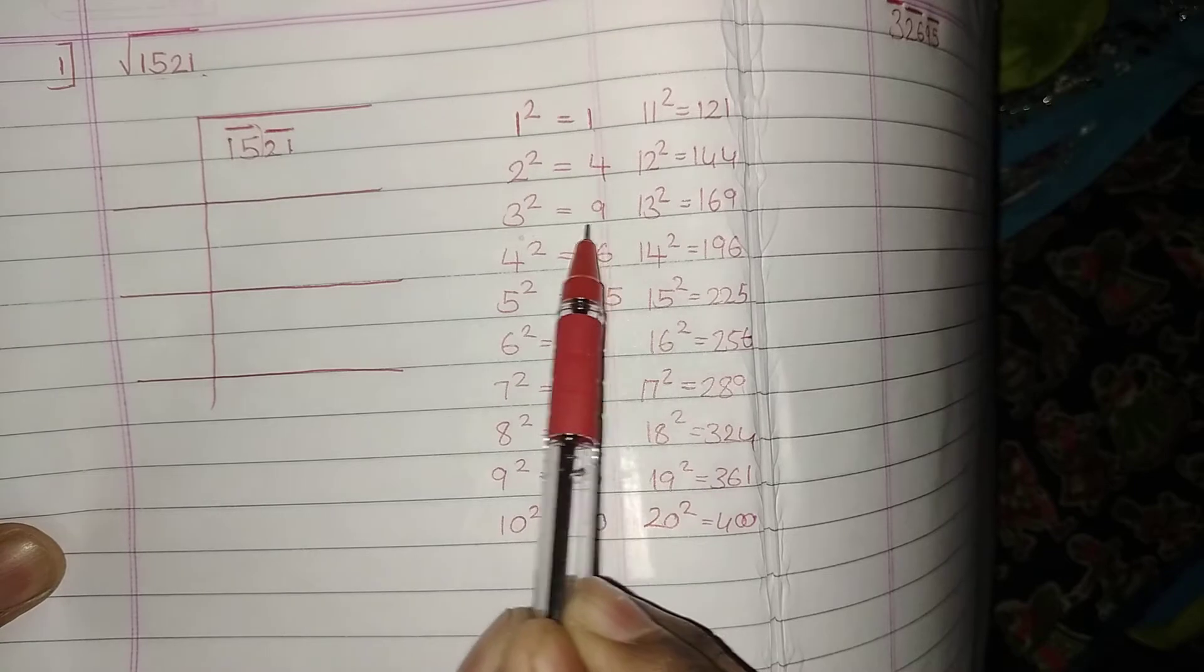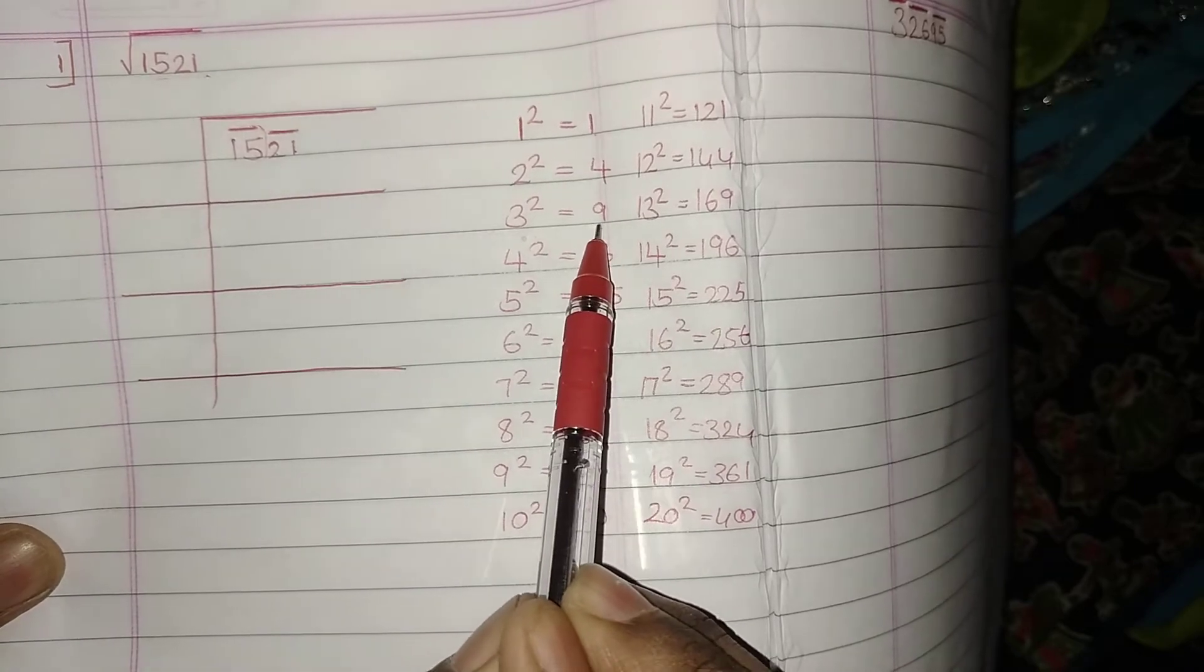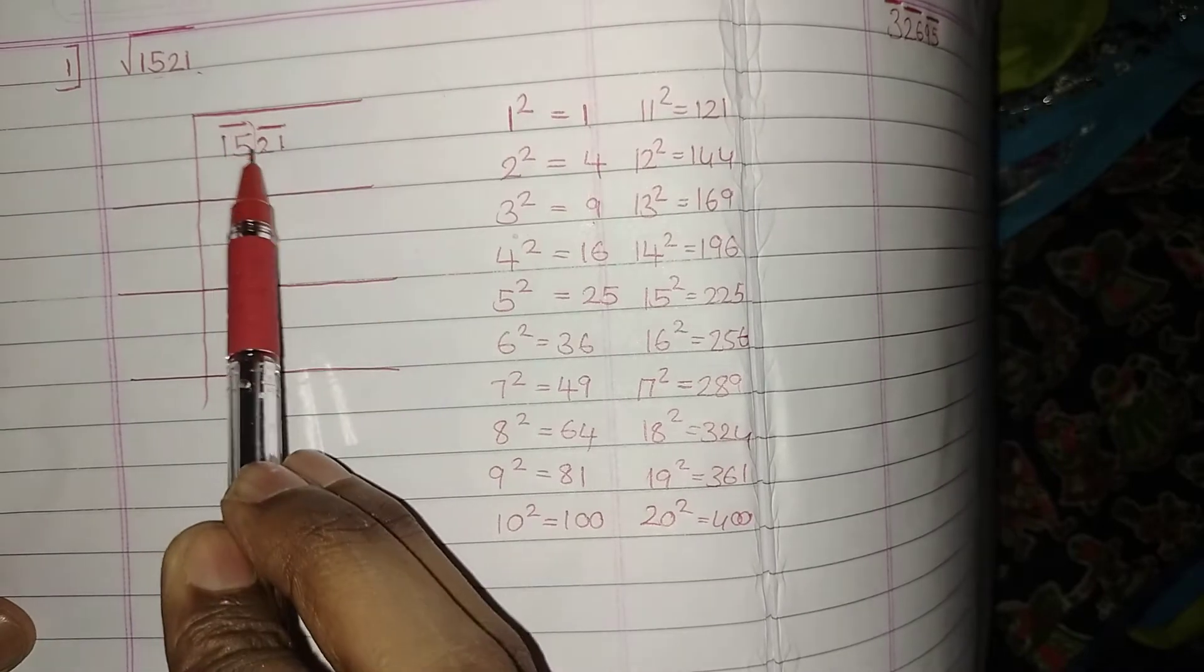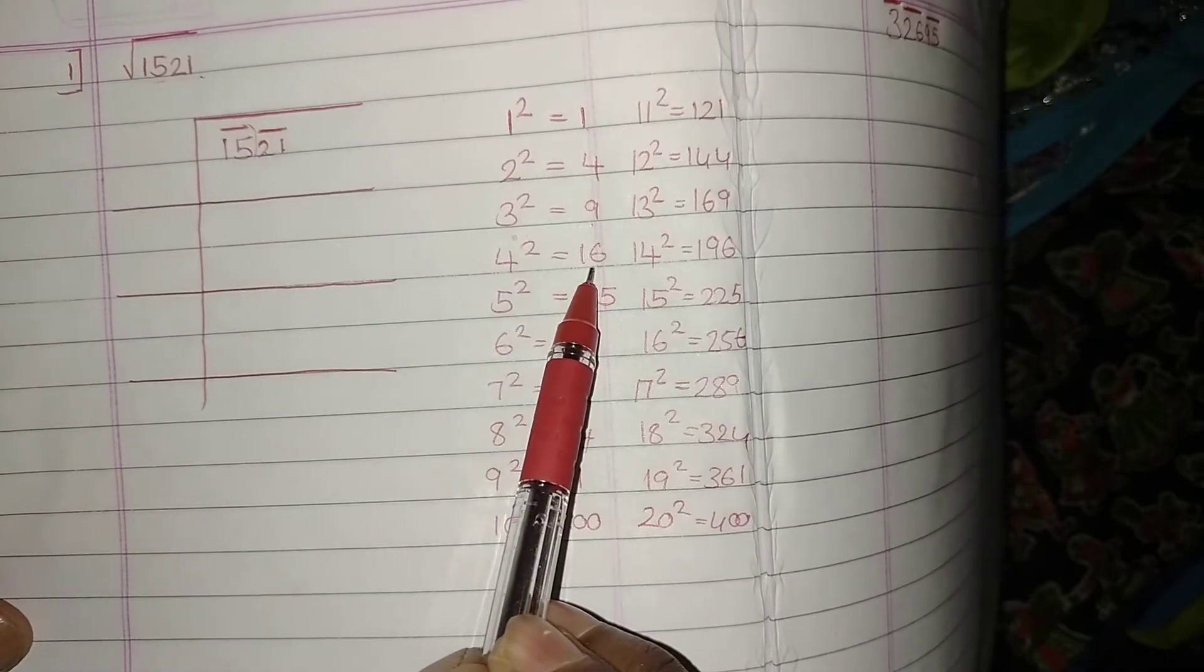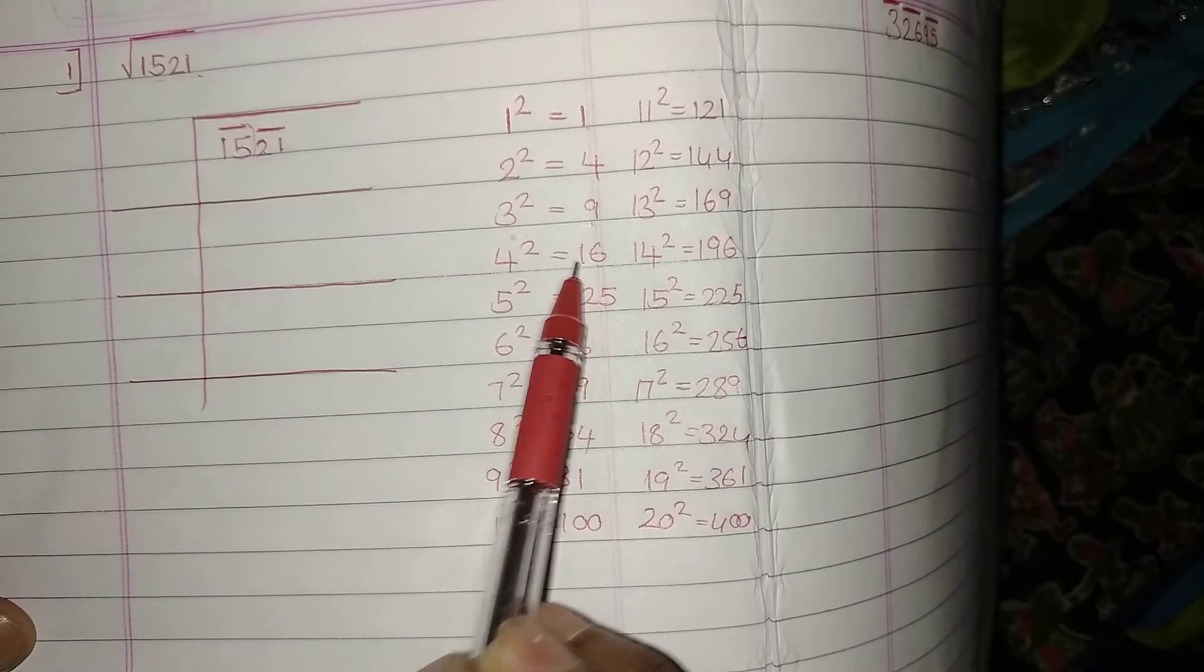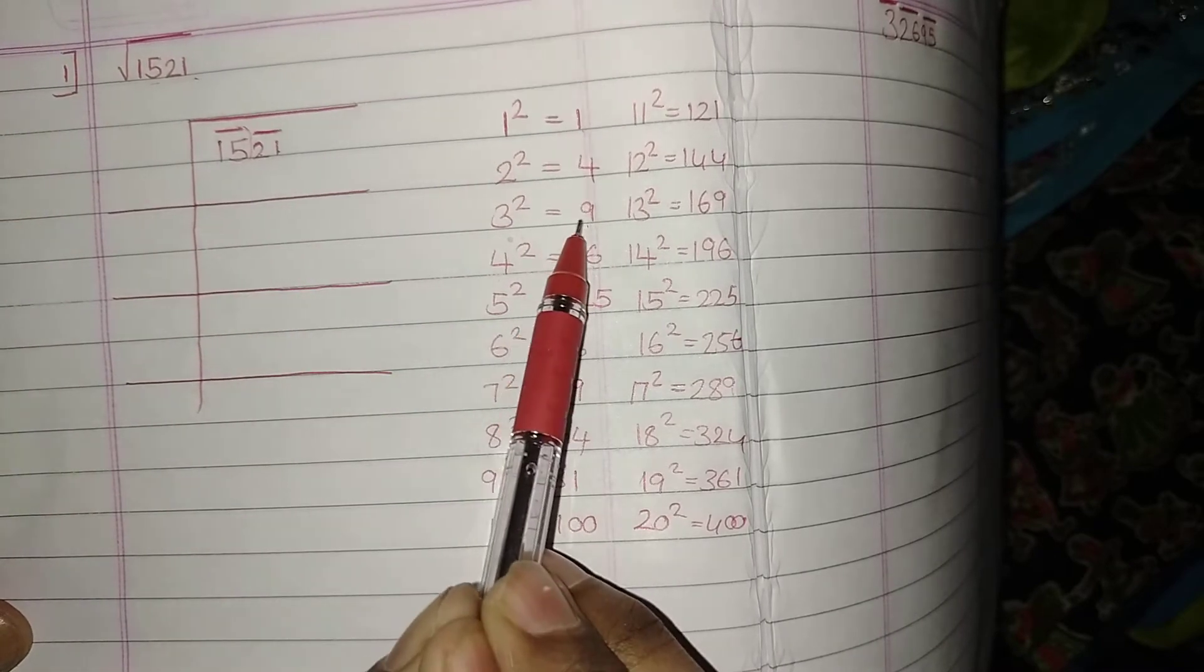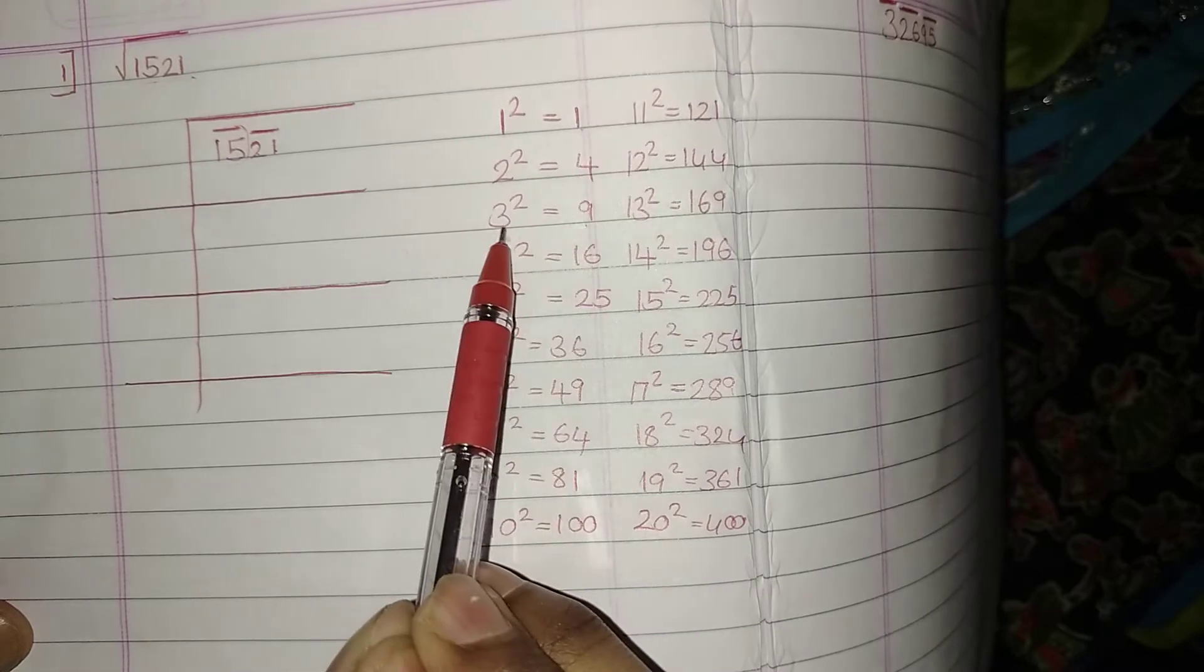So the closest and the smallest number is 9, am I correct? The closest and the smallest number is 9. 16 is also a closest number to 15, but I can't take 16 to be a value because 16 is greater than 15. Always we need to take the less value than 15, so that is 9.